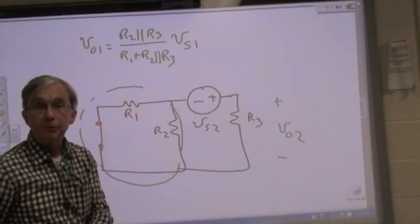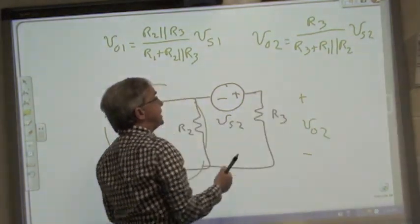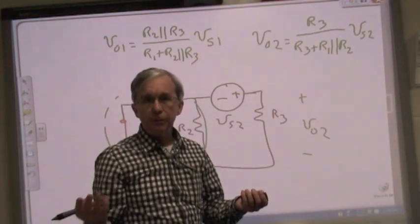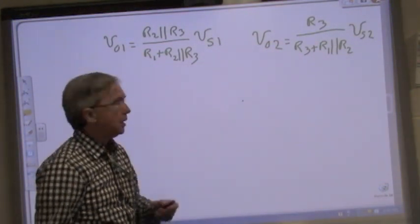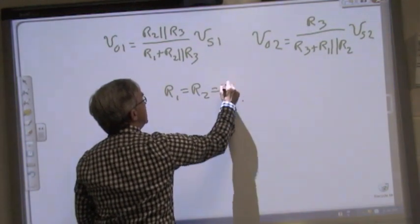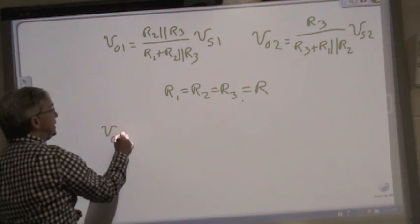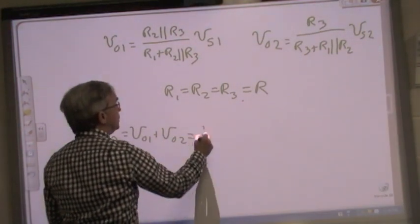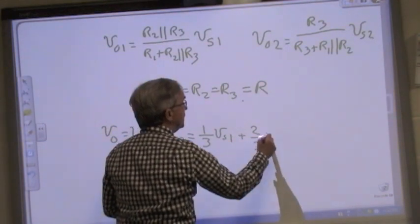Let's record that on the top of the board as well. And now we can say that Vout total is equal to Vout1 plus Vout2. Just to make things simpler, let's make R1 equal to R2 equal to R3. So if all the R's are equal to one another, let's just say equal to R, then this simplifies to say that Vout will be equal to one third of Vs1 plus two thirds of Vs2.